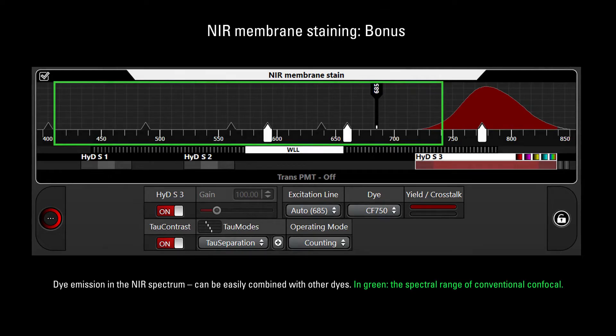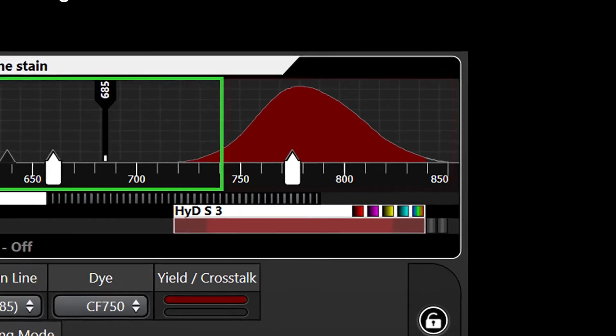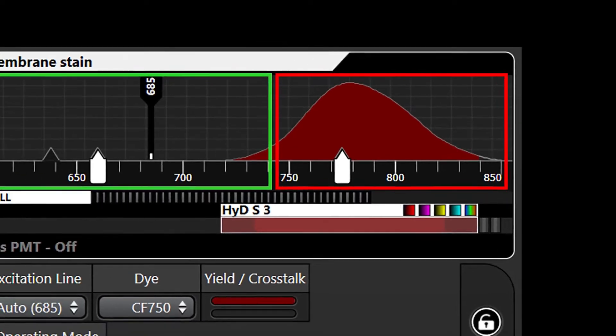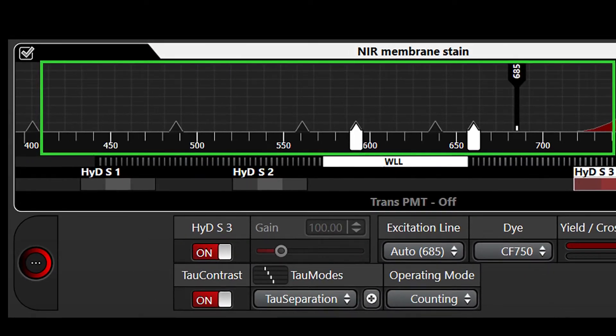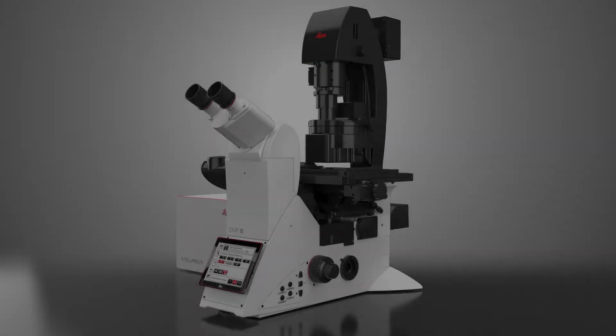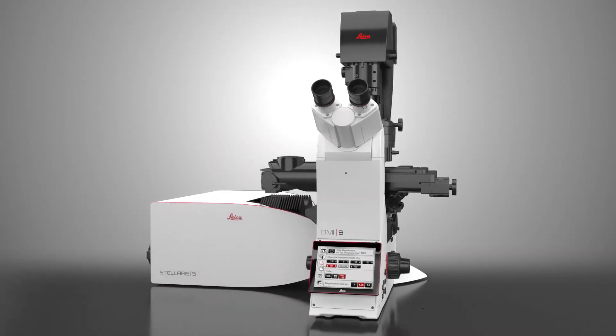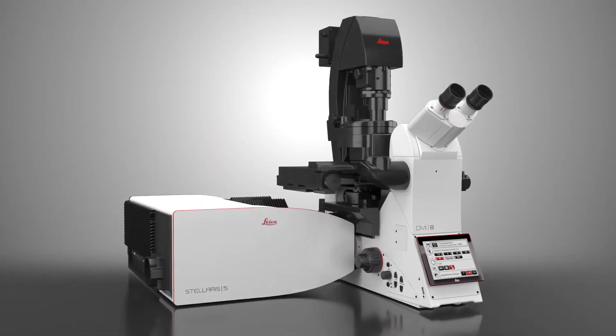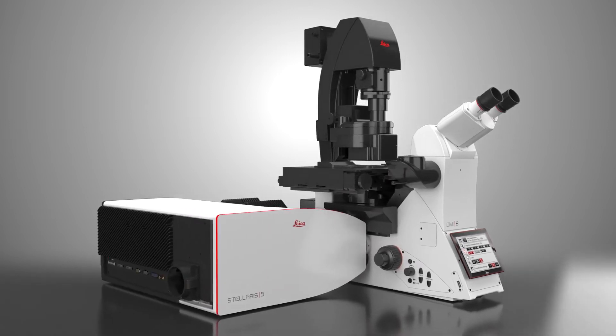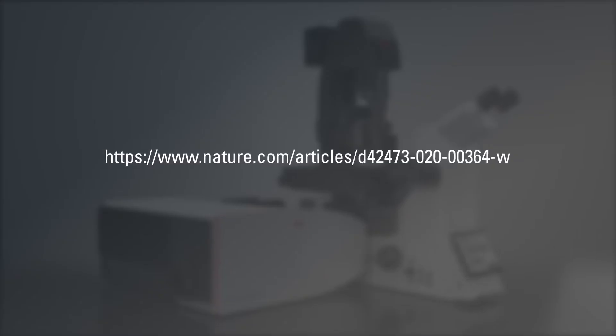And as a bonus, we used an NIR label, so this means we have the standard spectra window free to choose other labels relevant to the application we are investigating. Tau contrast and tau separation are part of our new TauSense technology in our Stellaris confocals. You can find more information on TauSense on our application note.